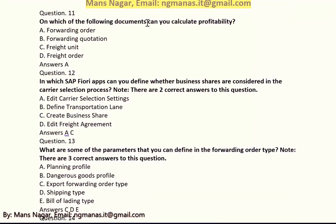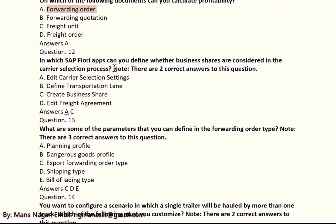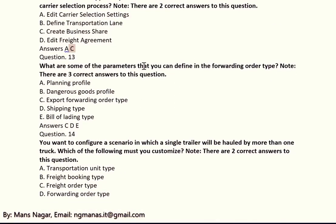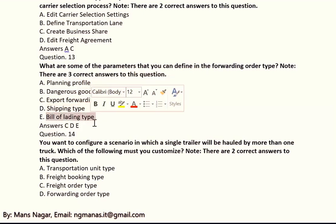On which of the following documents can you calculate profitability? The answer is forwarding orders. In which SAP application can you define whether business shares are considered in the carrier selection process? There are two answers: A and C — edit carrier selection setting and create business shares. What are some parameters you can define in the forwarding order type? There are three correct answers: C, D, and E — export forwarding order type, shipping type, and bill of lading type.